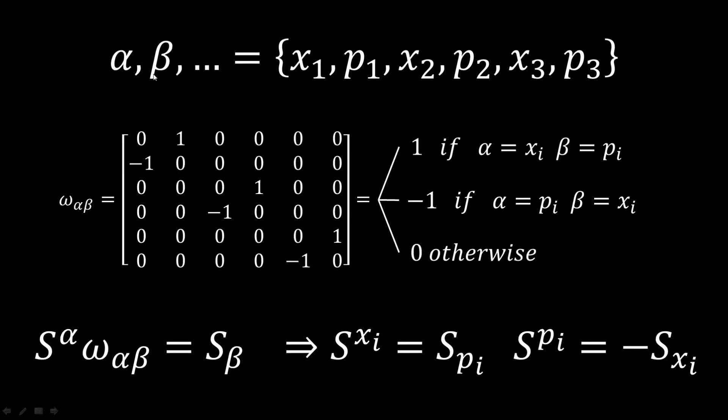We are going to introduce a Greek letter for indexes, like alpha, beta, gamma, delta. And each of these can take any direction in phase space. x1, p1, x2, p2, and we order them in this way.